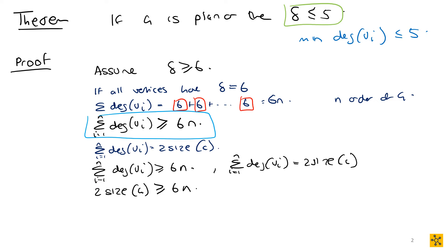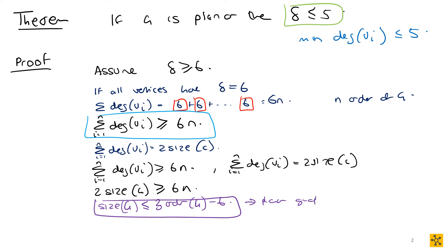We also know from planar graph theory that the size of G is less than or equal to three times the order of G minus six, i.e., |E| ≤ 3n − 6. From 2|E| ≥ 6n, dividing by two gives |E| ≥ 3n.